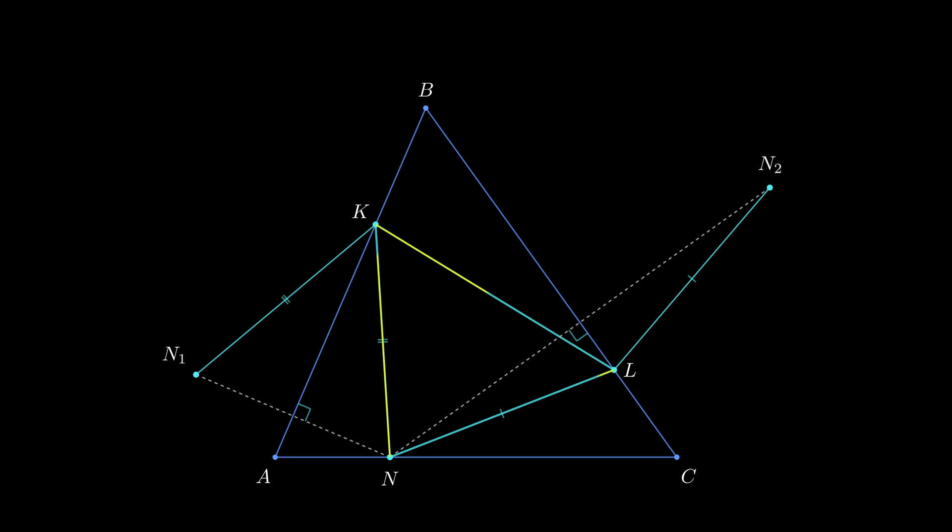In fact, the perimeter of the triangle equals the length of the polyline N1KLN2. And we know that the sum of the lengths of the links is greater than or equal to the length of the segment that connects the endpoints of the polyline.